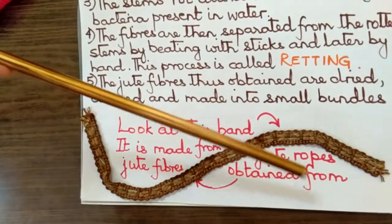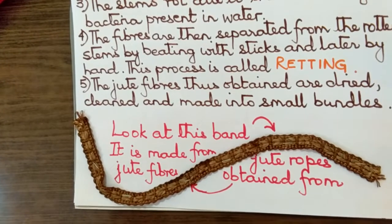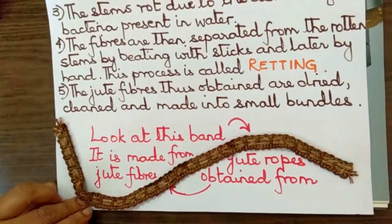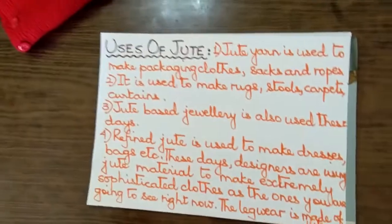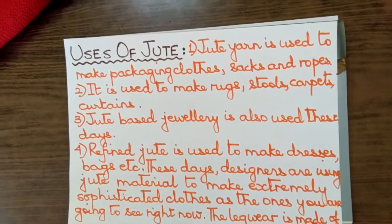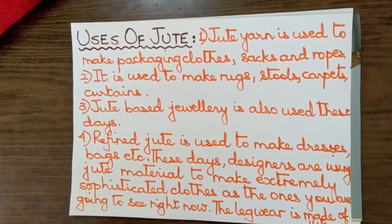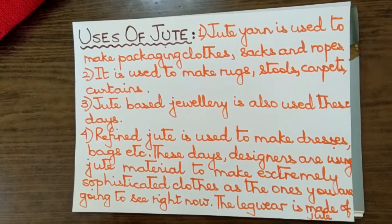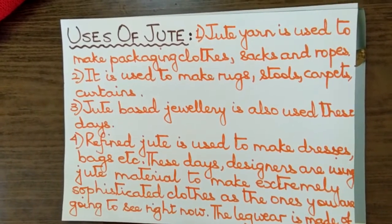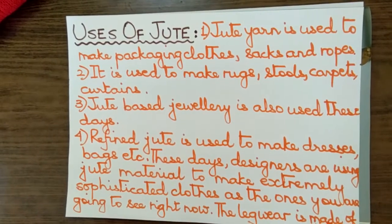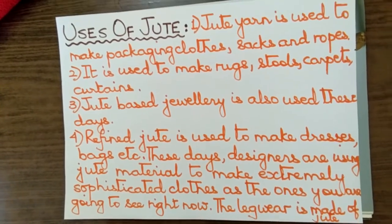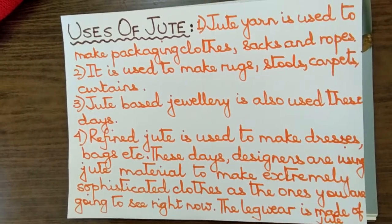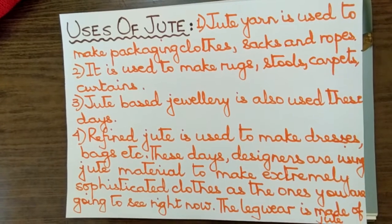Look at this band — it is made from jute ropes obtained from jute fiber. The uses of jute are: jute yarn is used to make packaging material, clothes, sacks and ropes. It is used to make rugs, stools, carpets and curtains. Jute-based jewellery is also used these days. Refined jute is used to make dresses and bags.